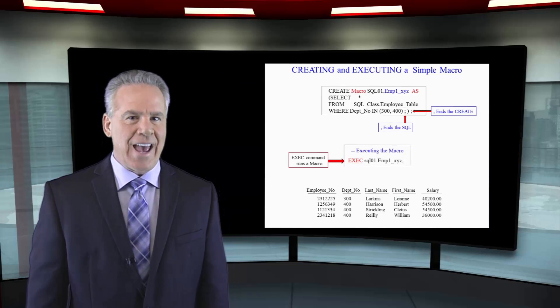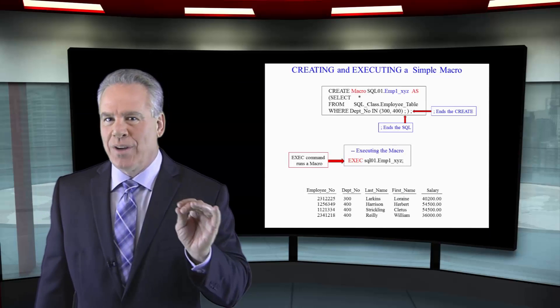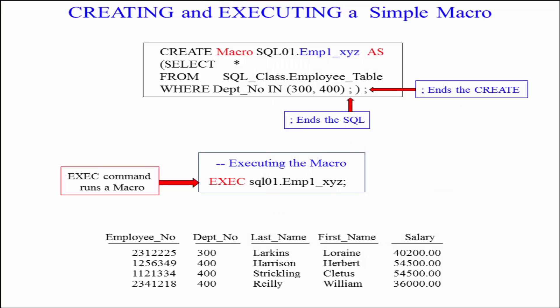Here is the syntax to create a macro. Create macro, macro name, as open paren. Select asterisk from sql-class.employee table where department number is in 300 and 400. Semicolon, close paren, semicolon.